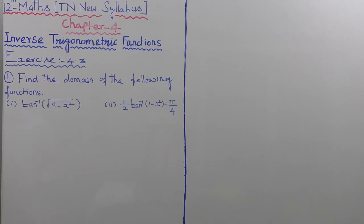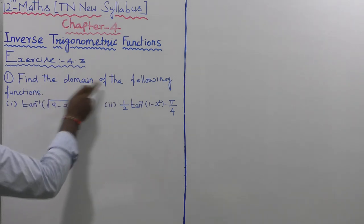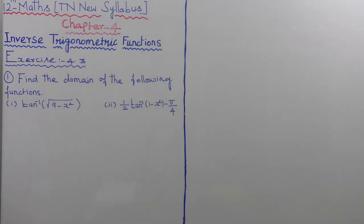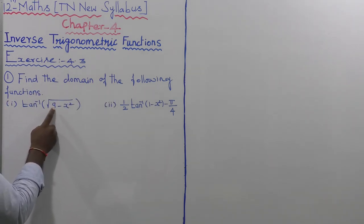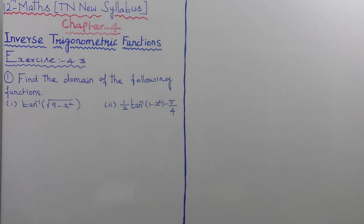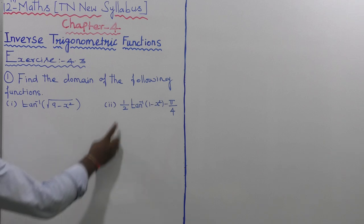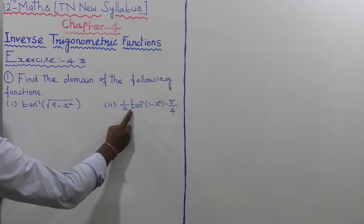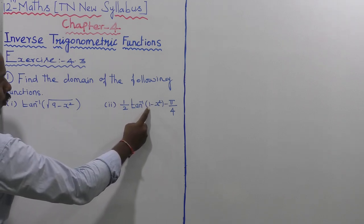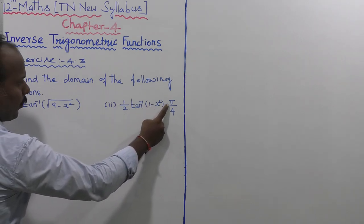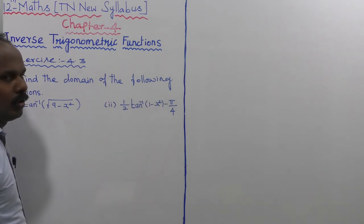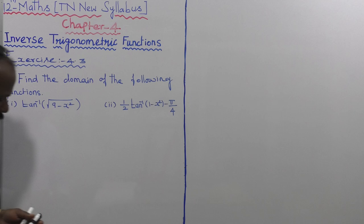Exercise 4.3, the first sum: find the domain of the following functions. The first function is tan inverse of root of 9 minus x squared. The second function is 1 by 2 into tan inverse of 1 minus x squared, minus pi by 4. Solution: